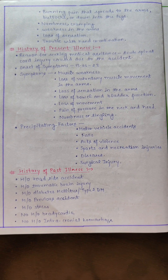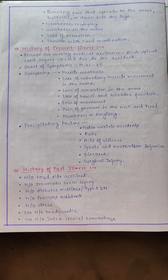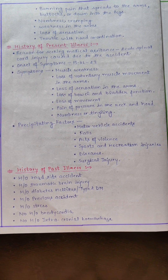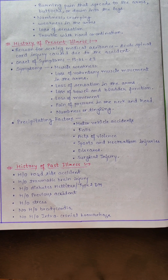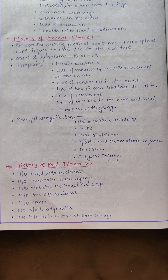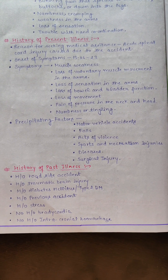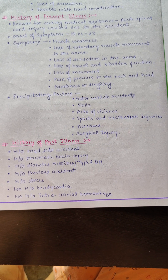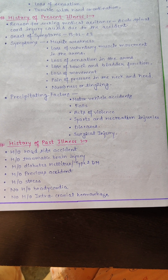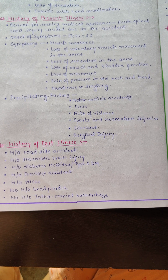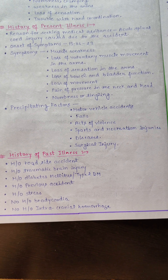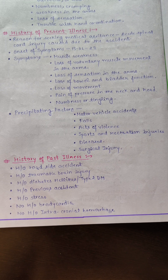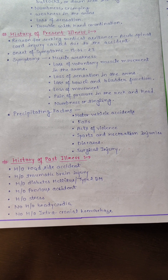Next, we will write the history of present illness — the reason the patient came to the hospital. The nursing diagnosis is that the patient has acute spinal cord injury caused due to an accident. Symptoms include loss of voluntary muscle movement in the arms, loss of sensation in the arms, bowel and bladder dysfunction, loss of movement, pain due to pressure in the neck and hand, numbness and tingling. Precipitating factors that can accelerate acute spinal cord injuries include motor vehicle accidents, falls, violence, sports and recreation injuries, diseases, or surgical injury.